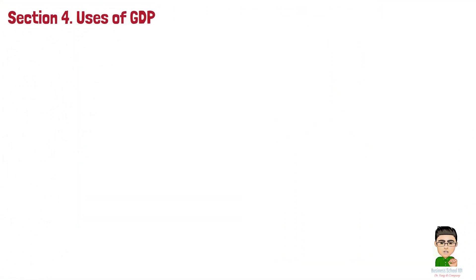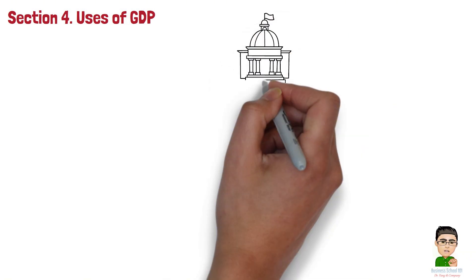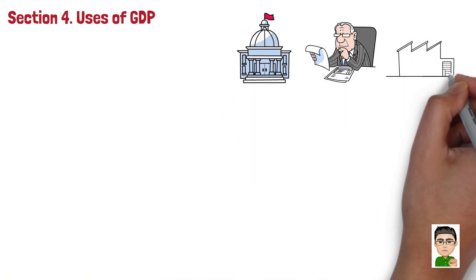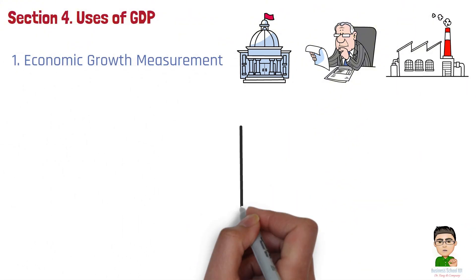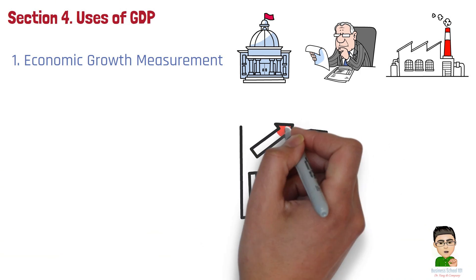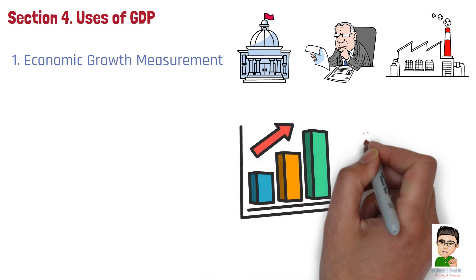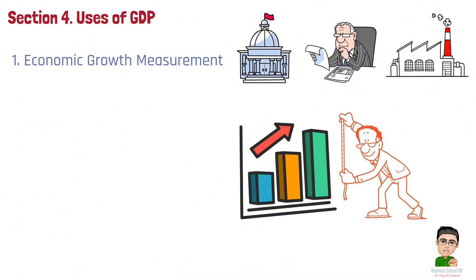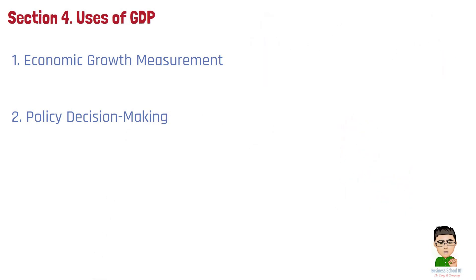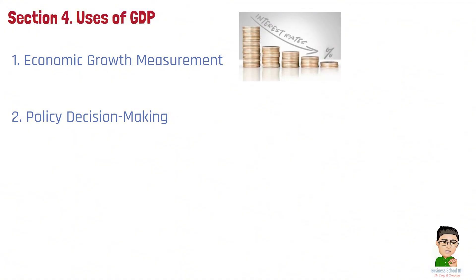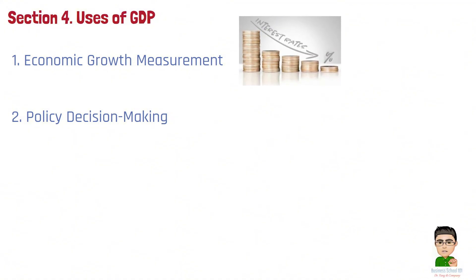Section 4: Uses of GDP. GDP is a crucial tool for measuring a country's economic performance and is widely used by governments, economists, and businesses. Number 1: Economic Growth Measurement — GDP is the most commonly used metric to measure economic growth. By tracking changes in real GDP over time, policymakers and analysts can determine whether the economy is expanding or contracting. Number 2: Policy Decision-Making — Governments and central banks use GDP data to formulate economic policies. For instance, if GDP growth is slowing, central banks might lower interest rates to stimulate investment and consumption.